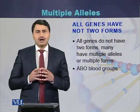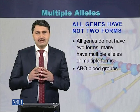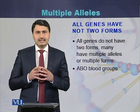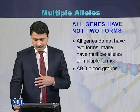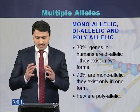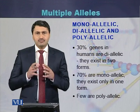Not all genes have two alleles. There are many genes which have a single allele, and there are many genes which are polyallelic — they have more than two alleles. Those genes are called polyallelic genes. Alleles can be monoallelic, diallelic, and polyallelic.